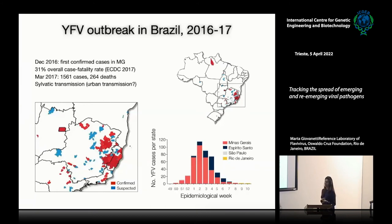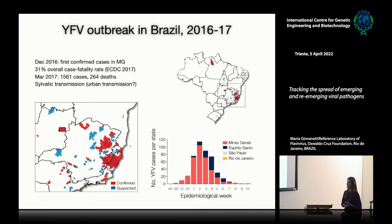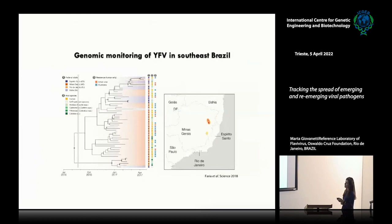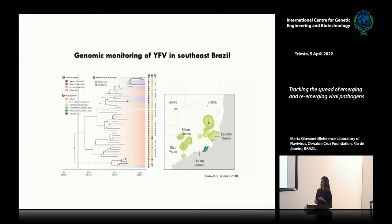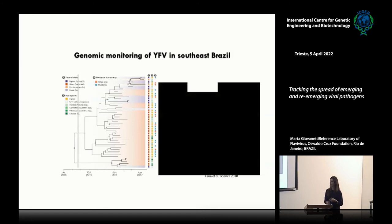We developed a protocol for the complete genome sequencing of this viral pathogen. We used the application of phylogenomics as well as phylogeography to reconstruct the dispersion dynamics of the virus since the first cases registered in Minas Gerais and its spread to other states, including São Paulo, Espírito Santo, and Rio de Janeiro.